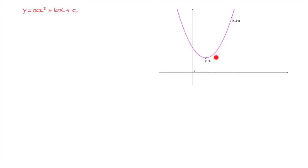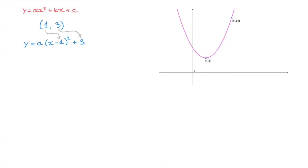Since we know the coordinates of this parabola's vertex — those coordinates are 1 and 3 — the theory behind the vertex form allows us to rewrite this parabola's equation as: y equals a times x minus 1 squared plus 3, where the 1 subtracted in the parentheses is the x-coordinate of the vertex, and the 3 added at the end is the y-coordinate of the vertex. This reduces the problem to only having to find the value of the coefficient a.